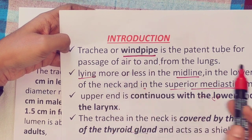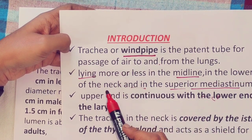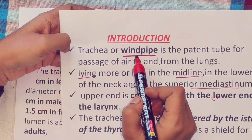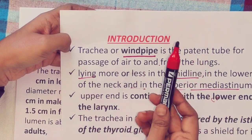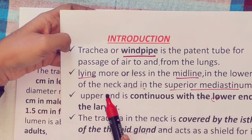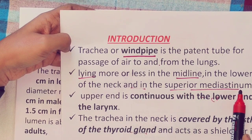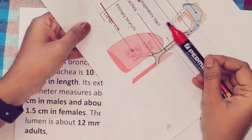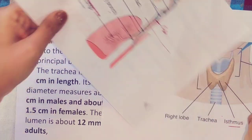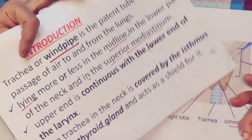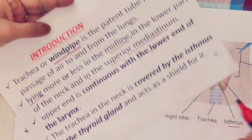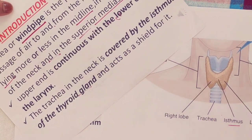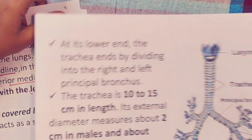To summarize the introduction: the trachea is the windpipe, lying in the midline in the lower part of the neck and superior mediastinum. Its upper end is continuous with the lower end of the larynx. The neck part is covered by the isthmus of the thyroid gland.